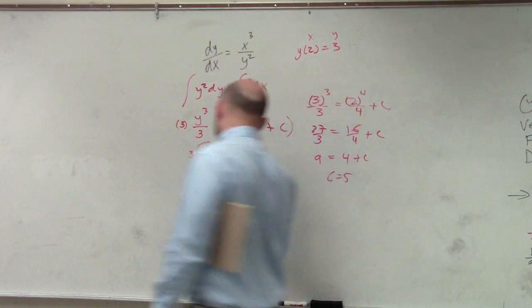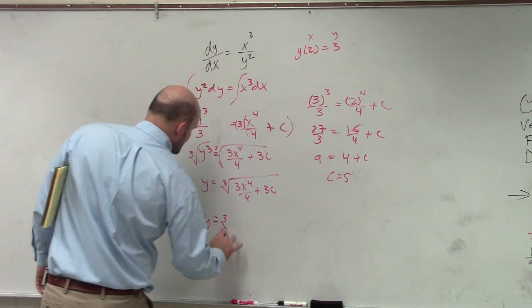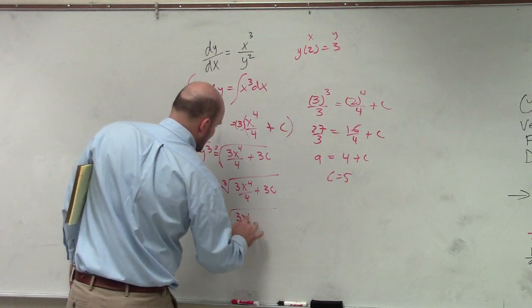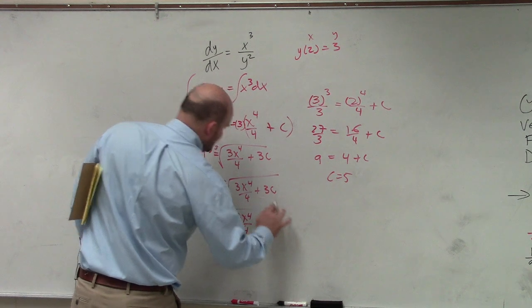I can go now and plug my 5 right in there. So y equals the cube root of 3x to the fourth over 4 plus 15.